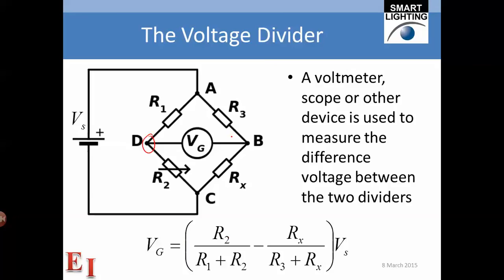But secondly, this voltage and this voltage are given by these expressions down here times the source voltage. Neither is equal to zero. So remember, we're taking a voltage measurement between two points, neither one of which is at zero.